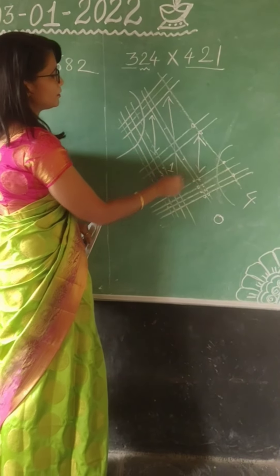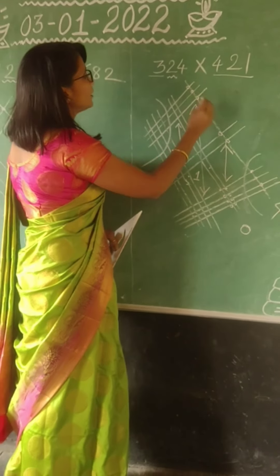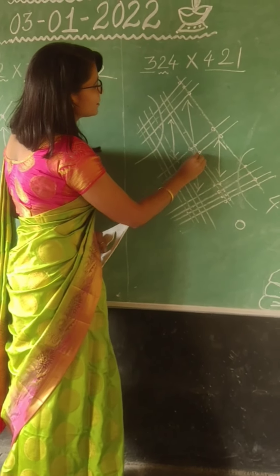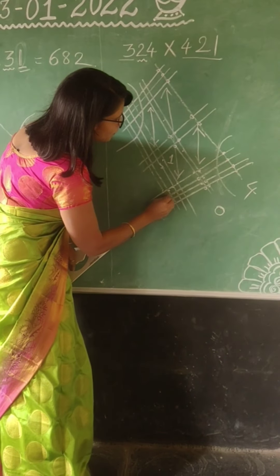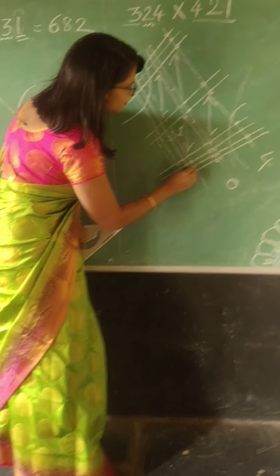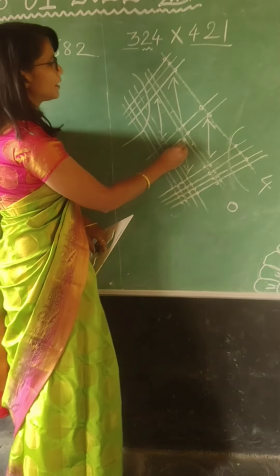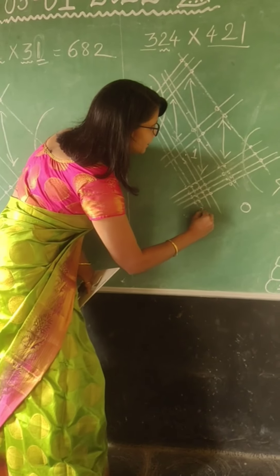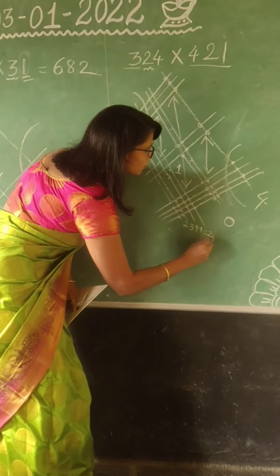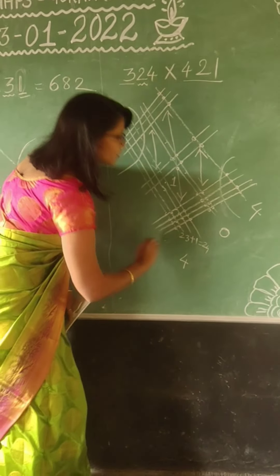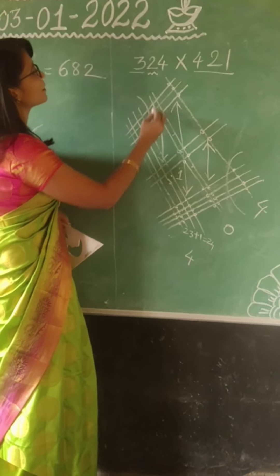Now we have to count these 3 intersections: 1 through 23. And this one — 23 plus 1 equals 24. So we have to keep the 4 digit here and carry over 2.